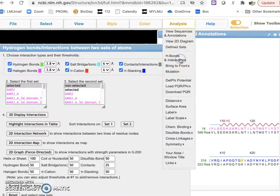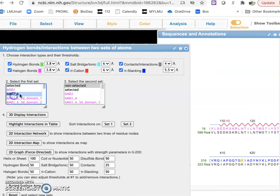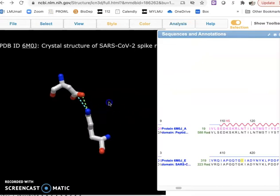I will go to the next step of analysis, H-bonds and interactions. I select the first set as the receptor, the second set as the spike protein again. I want to focus on ionic salt bridges, ionic bonds, and hydrogen bonds, and see the 3D interactions of that.